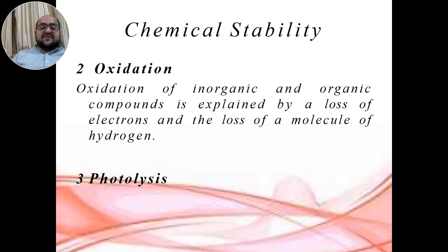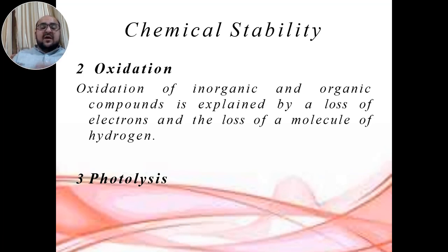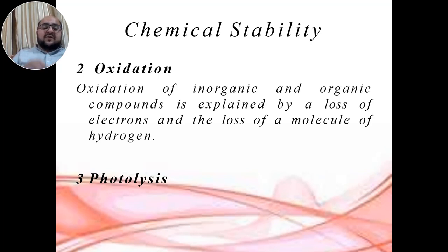Oxidation can also degrade drug products and change their state. The third process is photolysis, which is another chemical process relevant to chemical stability. In the presence of sunlight, drug products can degrade or break down. 'Photo' means light and 'lysis' means splitting. So the breakdown or splitting of any drug product in the presence of sunlight is called photolysis.